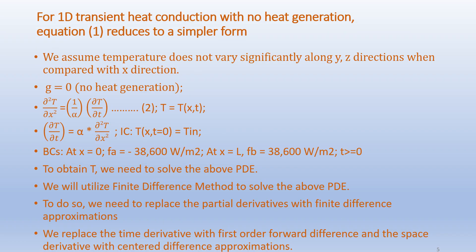For 1D transient heat conduction with no heat generation, the equation reduces to a simpler form. We assume the temperature does not vary along the y and z directions compared to x — in other words, we insulate the bar except at the ends and there is no heat generation, so G = 0. Accordingly, we get ∂²T/∂x² = (1/α)(∂T/∂t), rearranged as ∂T/∂t = α(∂²T/∂x²).